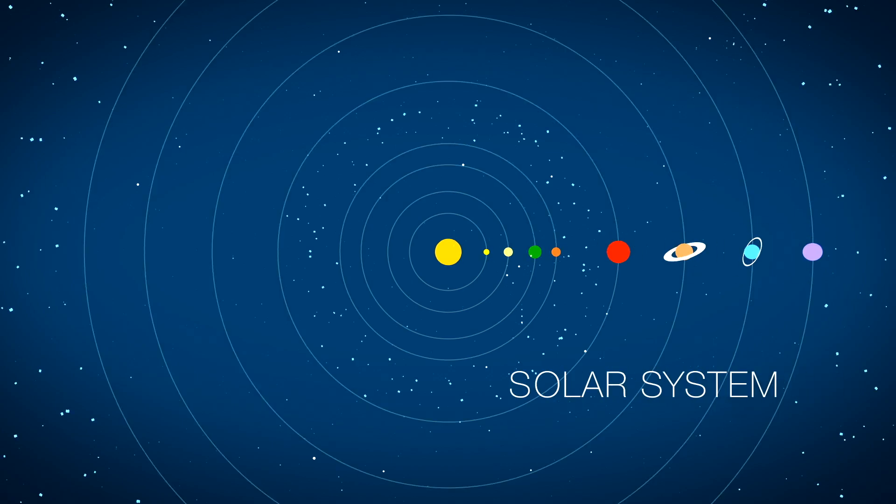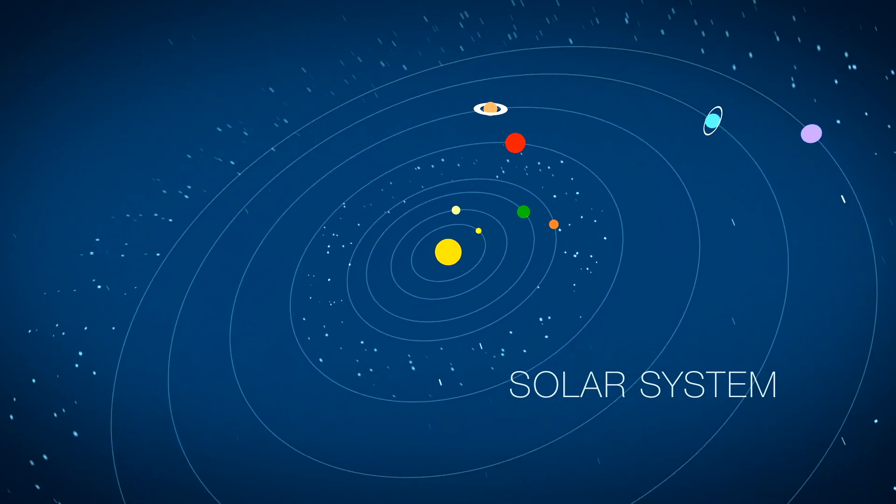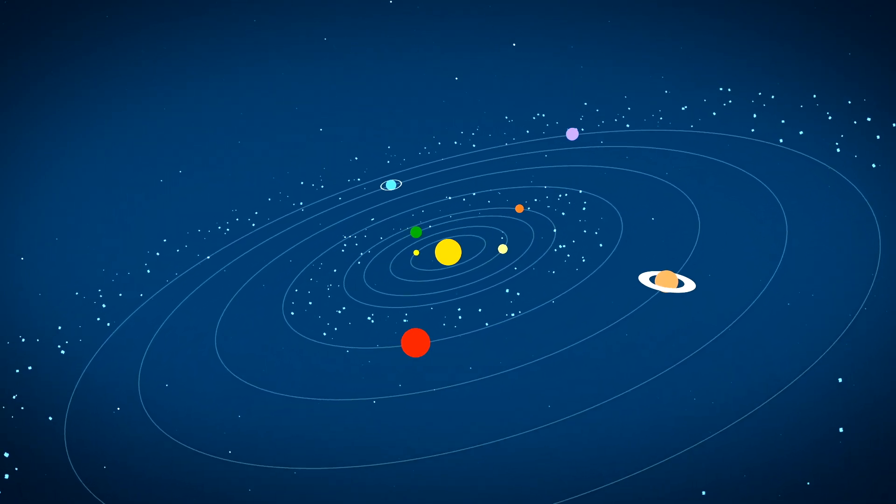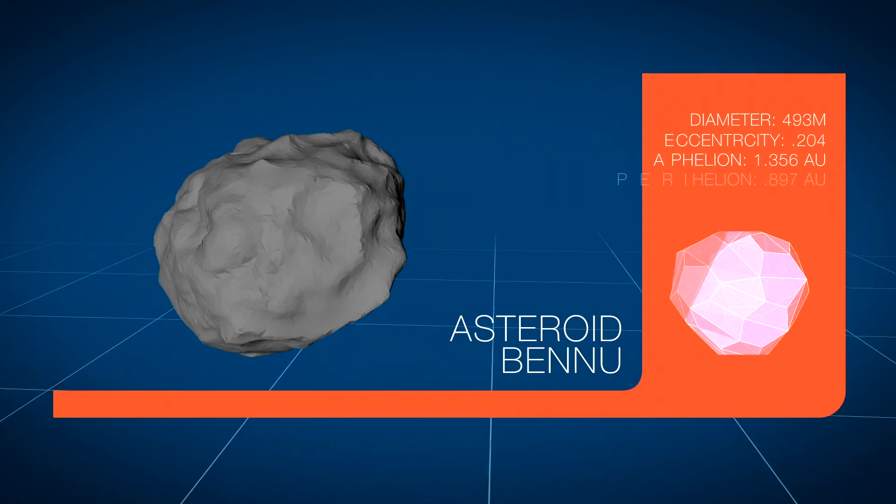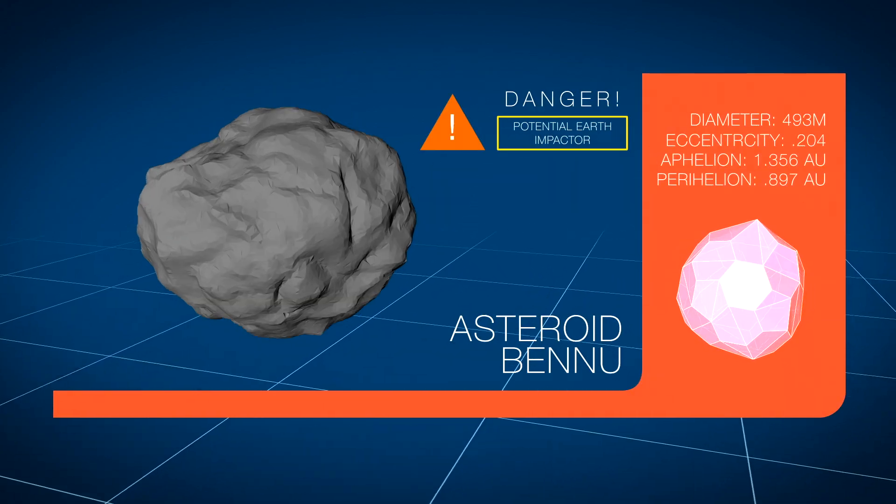From a distance, everything in our solar system appears to be in its place. However, if you take a closer look, sometimes you can find asteroids, like Bennu, leaving their home in the inner asteroid belt and passing very close to Earth.